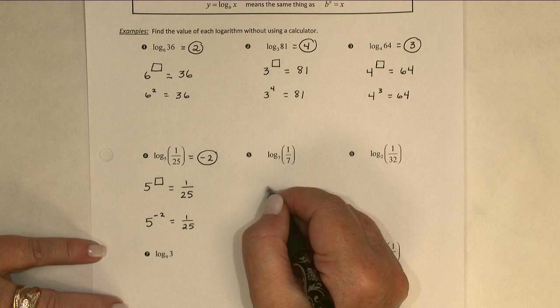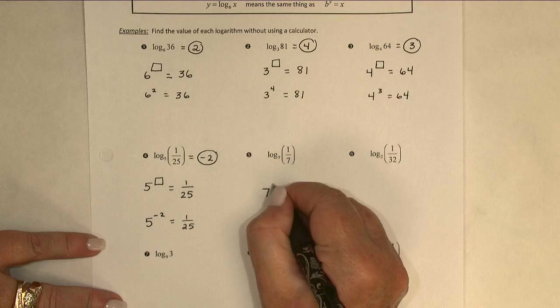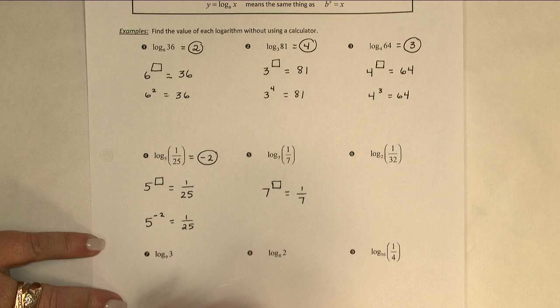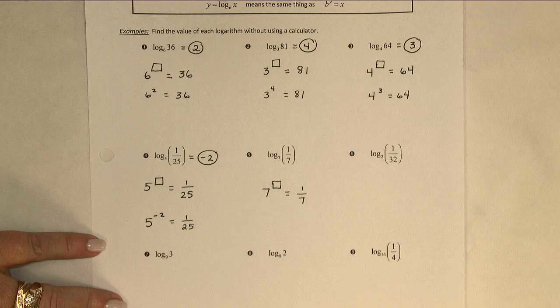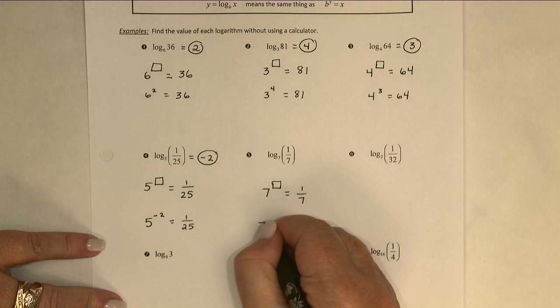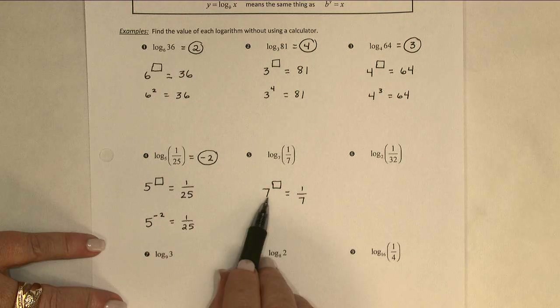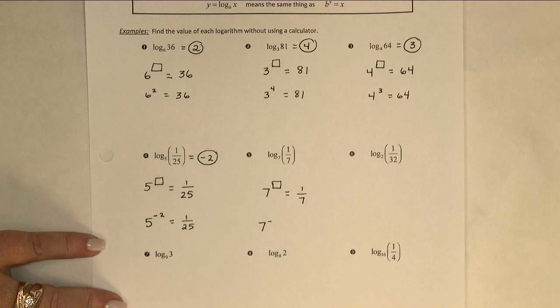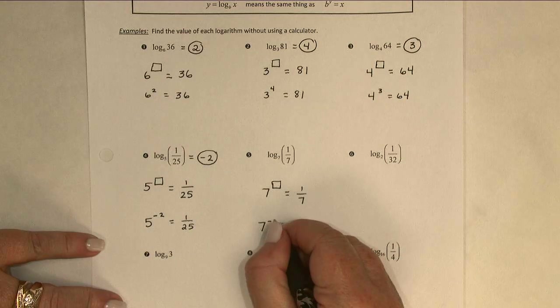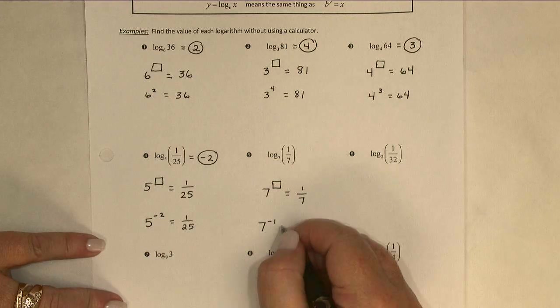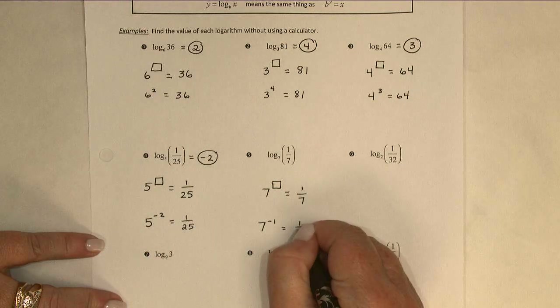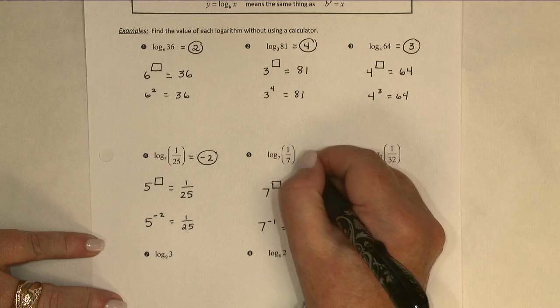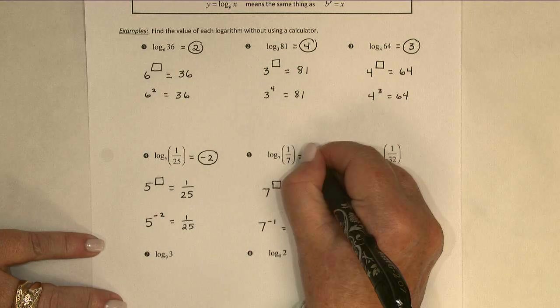In number 5, 7 to what power gives me 1 7th? Once again, I know I needed to use a negative power to put it in the denominator. And 7 to the first power is 7. So, 7 to the negative 1 is 1 7th. And that exponent, or the value of the logarithm, is negative 1.